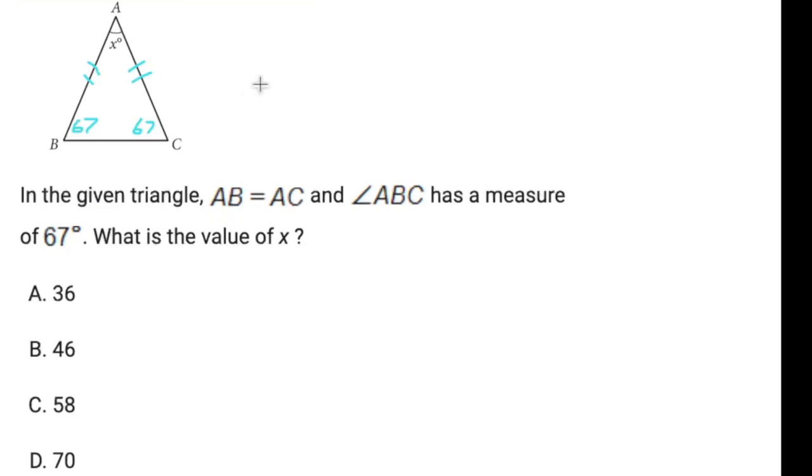I know that there are 180 degrees in a triangle. So 180 degrees minus the two 67 degrees. 67 times 2 is 134. And 180 minus 134 is 46. So my answer is B, 46.